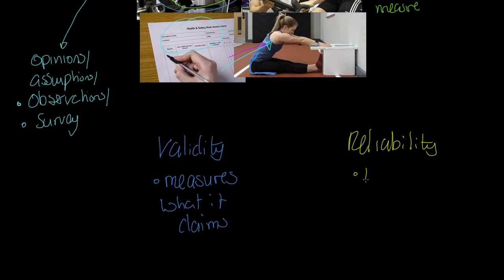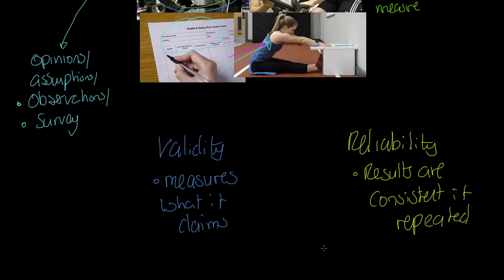Reliability is a different notion — it states that results need to be consistent. If we retest, assuming nothing has changed through adaptation or injury, results should be consistent if repeated. A good example is BIA — bioelectrical impedance analysis. It's a device you hold out in front of you that sends a small current through your body and predicts fat percentage and lean tissue. The problem is it gives different results every time. It has low reliability. It's accessible and practical, but we can't take it as a reliable measure of body fat — it's only an indication.